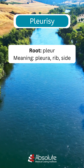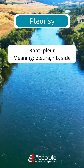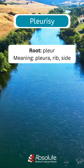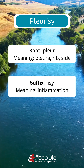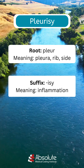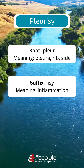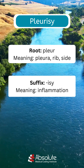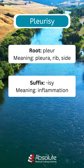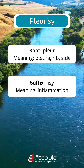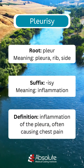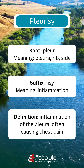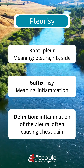The root word pleur means pleura, rib, or side. The suffix -isy means inflammation. When you combine the root word and the suffix, you get the definition: inflammation of the pleura, often causing chest pain.